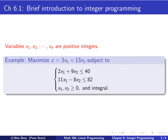So now we go through an example. We want to maximize an objective function, and we have two constraints. The new thing here is that the variables x1 and x2 are not only non-negative, but also integral — meaning they are integers.